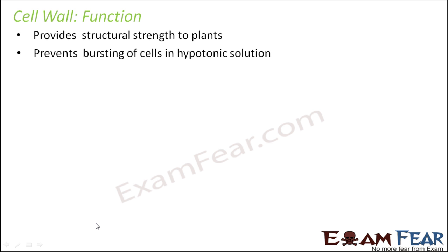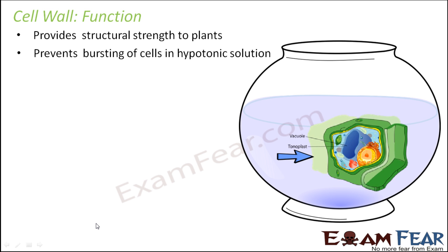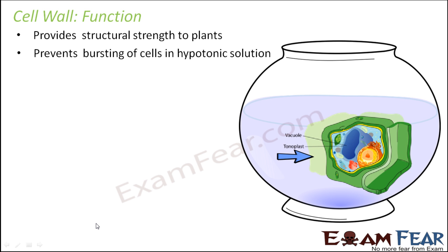Another function is to prevent bursting of cells in hypotonic solution. A hypotonic solution is one where the concentration of water is more than that inside the cell. When you put a cell inside a hypotonic solution, water will start getting inside the cell because water concentration is higher in the solution. As more and more water enters the cell, the cell starts swelling up, and if too much water comes inside, it will exert a lot of pressure on the cell walls and the cell might burst.